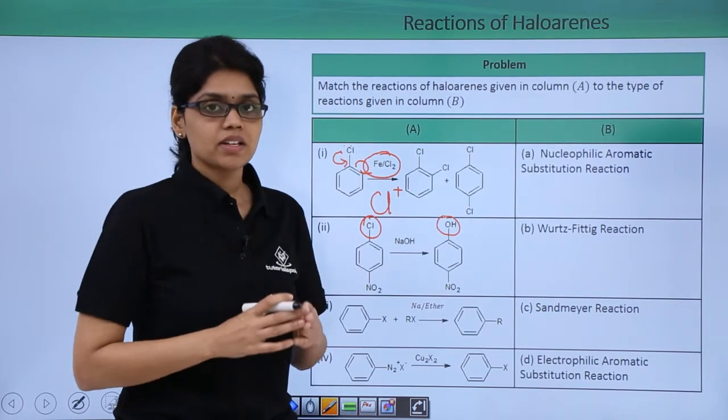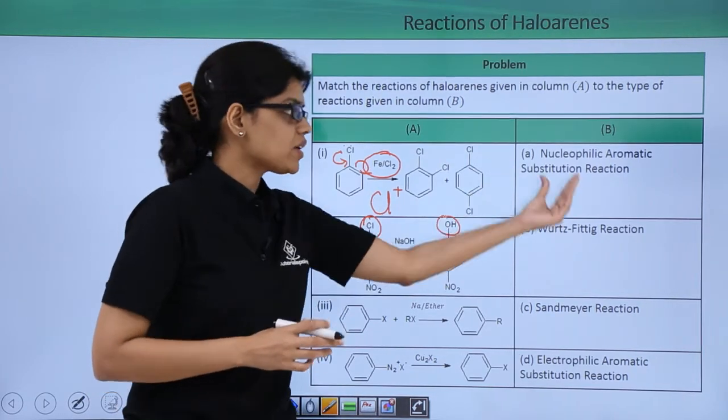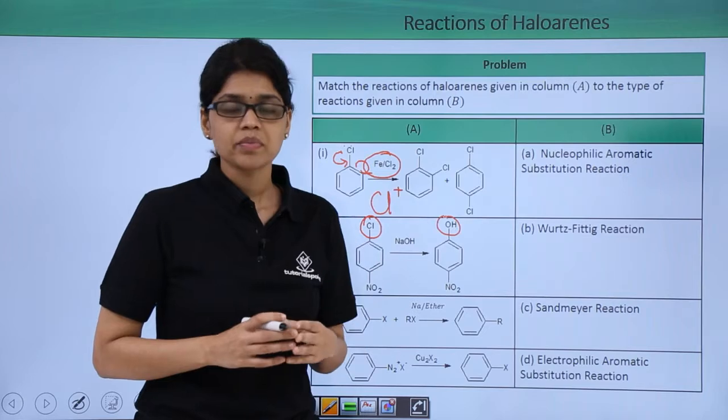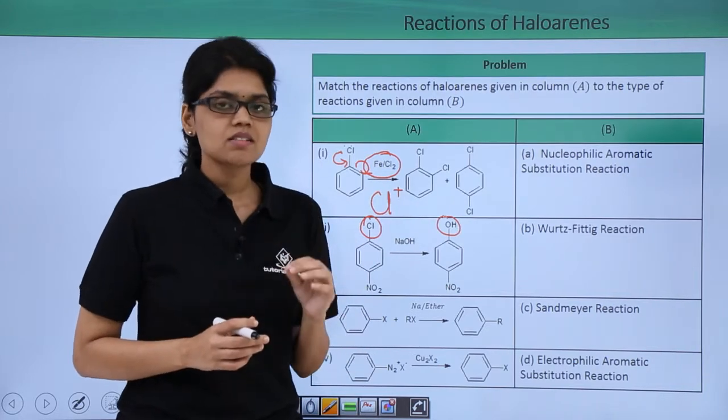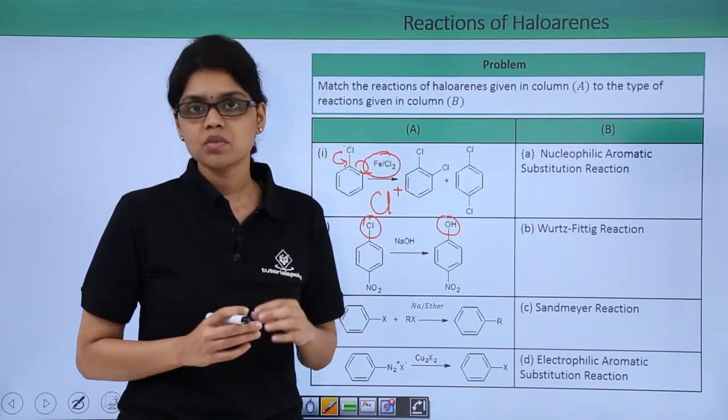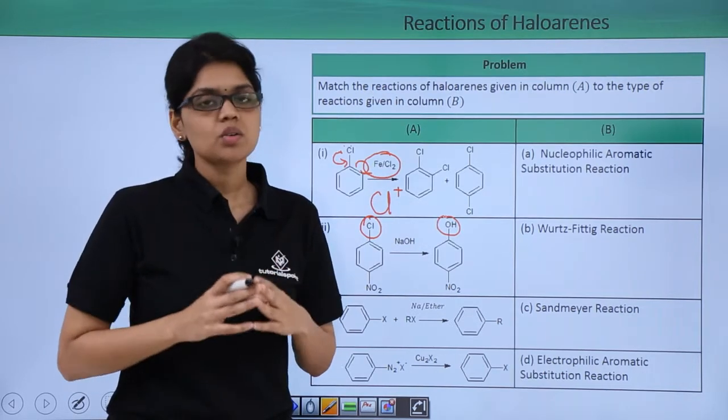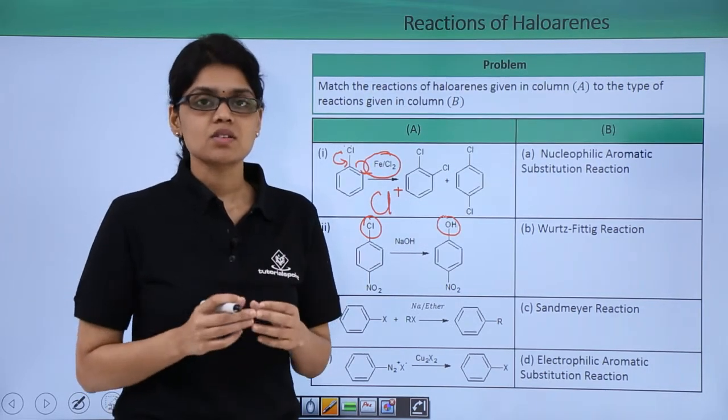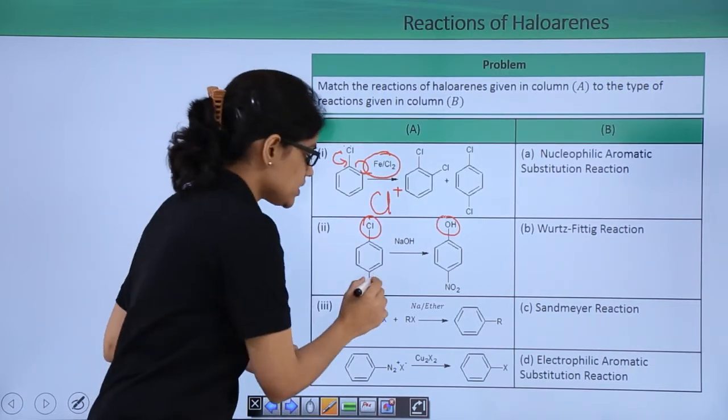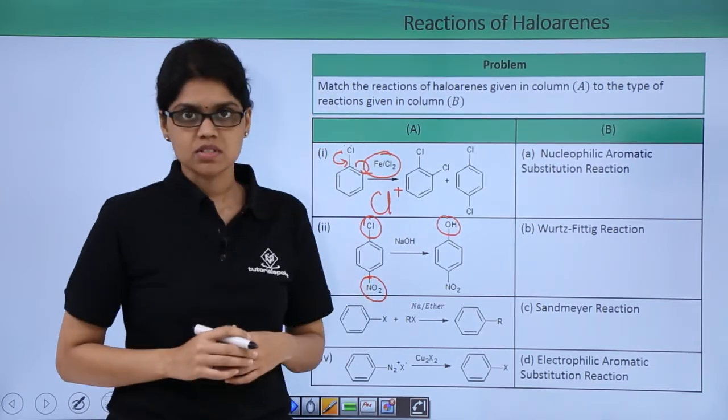So this is an example of nucleophilic aromatic substitution reactions. We can recall that in general haloarenes are not reactive towards nucleophilic aromatic substitution. However, they undergo this reaction in the presence of electron withdrawing groups when they are present at ortho or para position.